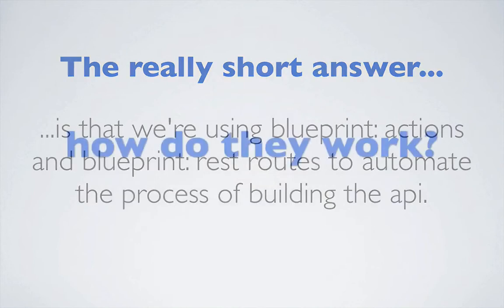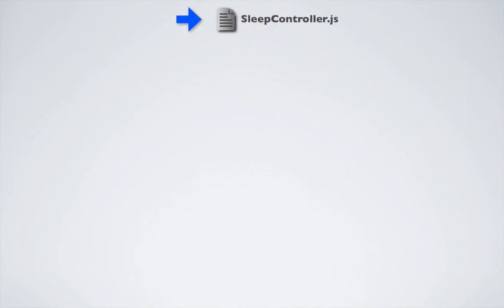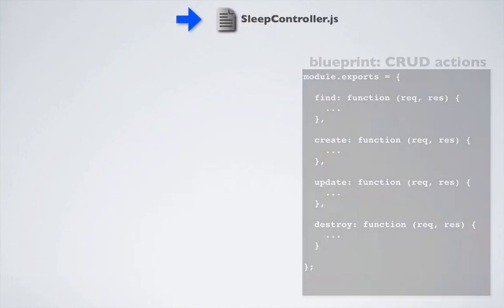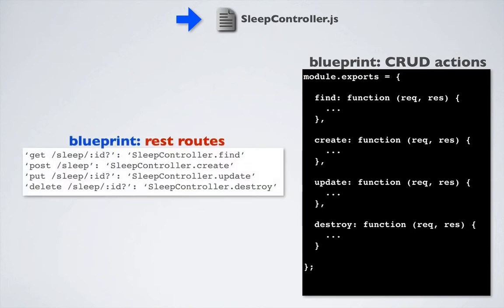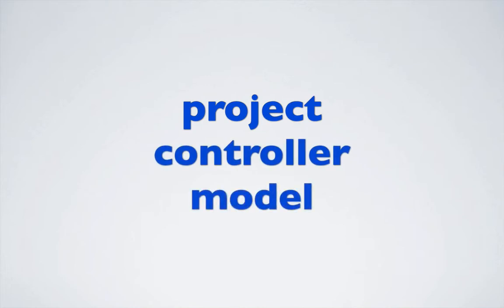The next question is, how do they work? When Sails initially starts using Sails lift, Sails looks to see if you have any controllers defined. In our example, we have one controller — the sleep controller. Sails then provides access to blueprint actions for the sleep controller as if we built them in the controller ourselves. Sails also automatically creates blueprint REST routes that are identical to the routes we explicitly created in the last episode. When combined together, the blueprint actions and blueprint REST routes give us the exact functionality we had in our manually created JSON RESTful CRUD API without having to create anything other than a project, an empty controller, and an empty model.